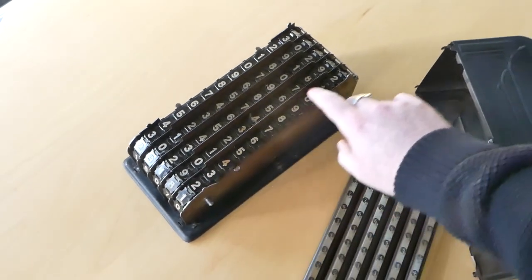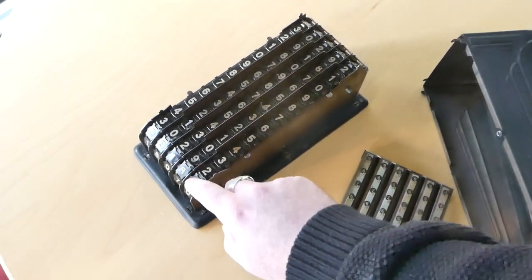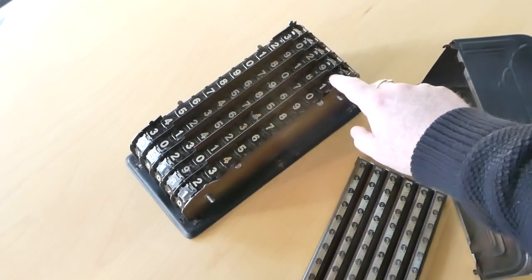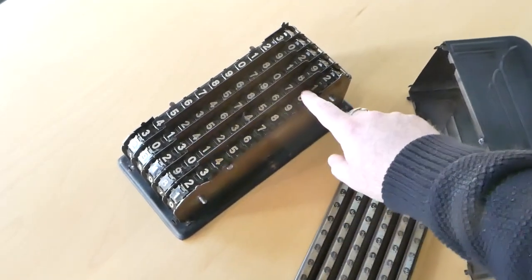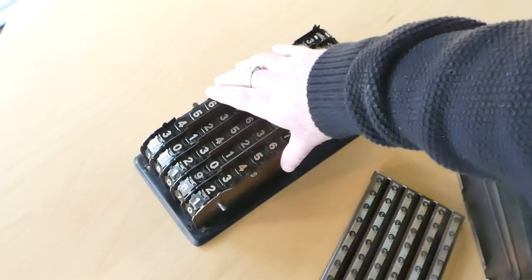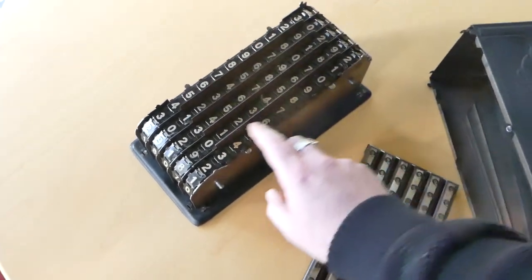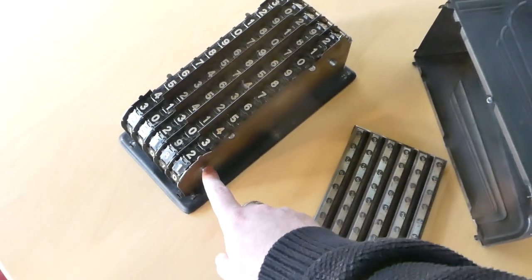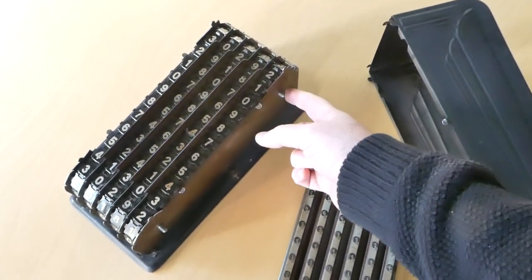It has these chains, each with 30 plates numbered 0 to 9, repeated three times. And it goes around a wheel at the front on this axle and a wheel at the back at this axle.